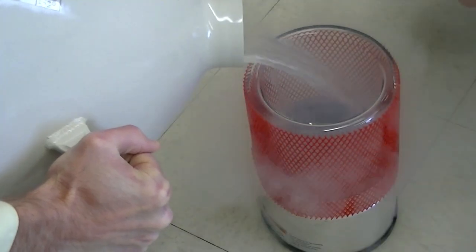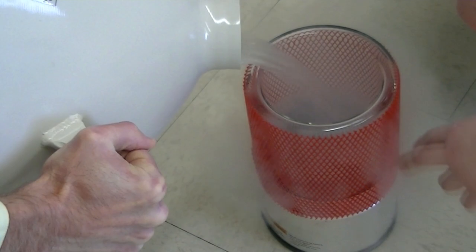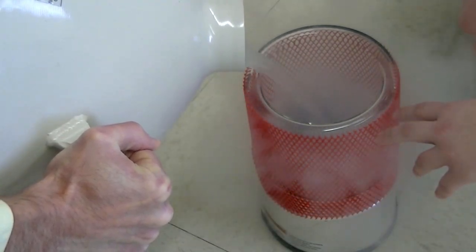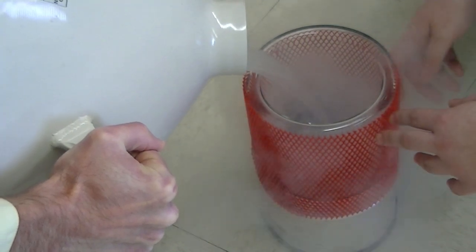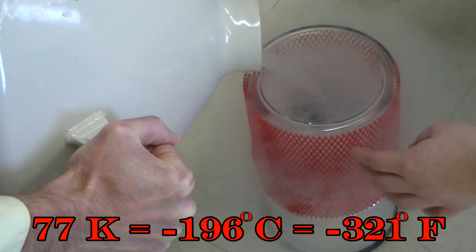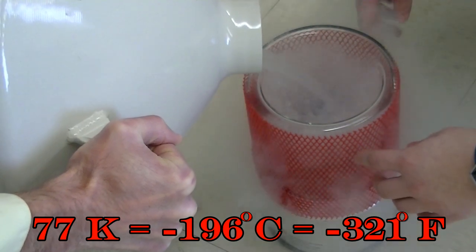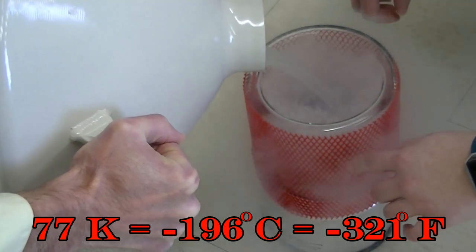Liquid nitrogen is colder than the coldest weather event ever recorded on Earth. It's about the same temperature as the surface of the planet Neptune. The temperature of liquid nitrogen is 77 Kelvin on the absolute temperature scale. That's equal to minus 196 degrees Celsius or minus 321 degrees Fahrenheit.